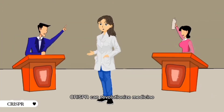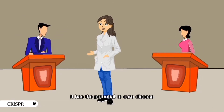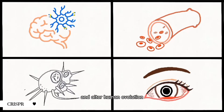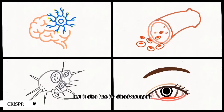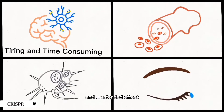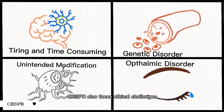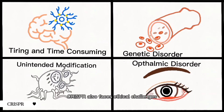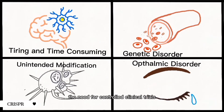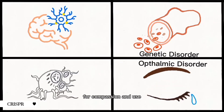CRISPR can revolutionize medicine by curing various hereditary ailments. It has the potential to cure disease and alter human evolution. But it also has its disadvantages. It is time-consuming and unintended off-target modifications are possible. CRISPR also faces ethical challenges, including the need for controlled clinical trials with adequate review and policies for compassionate use.